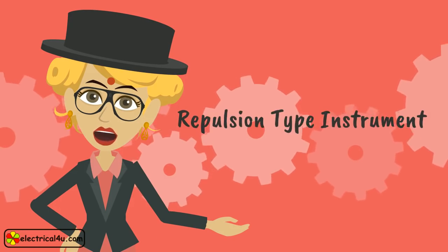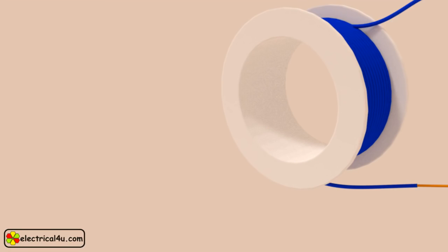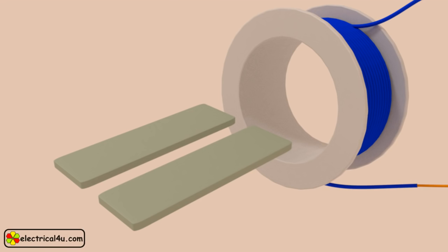Let's talk about repulsion type moving iron instrument. Let us take an electromagnet. Now two rectangular pieces of iron strip are placed side by side near to the electromagnet as shown here.